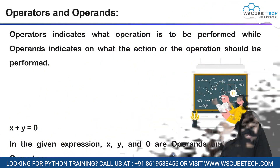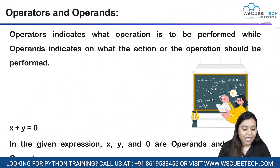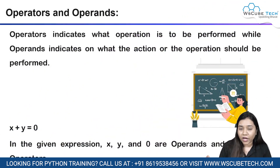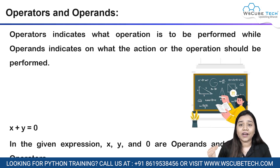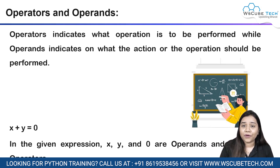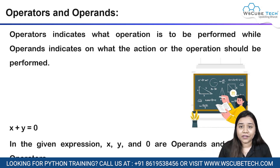Let's understand with the help of a simple example. Here we have x plus y is equals to 0. Now here x, y, and 0 are the operands, and plus and equals to are the operators.